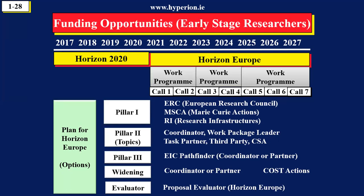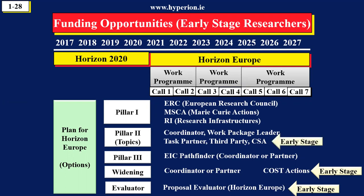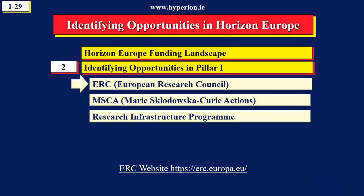If you're an early-stage researcher starting your career, I always recommend starting as an evaluator to learn the evaluation process. COST Actions fund networks of scientists in the same area. You could be a third party, task partner, or involved in a CSA. You can get funding through Marie Curie for PhDs or postdocs, or simply visit a research infrastructure. In Module 7, we'll come back to this slide and show you a template for presenting it. That's the end of Module 1 — we're now going to move on to the individual programs in Pillar 1.